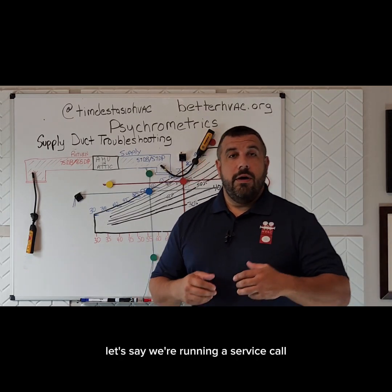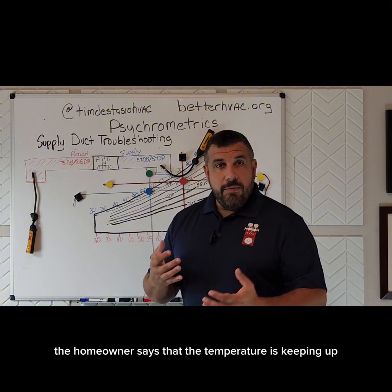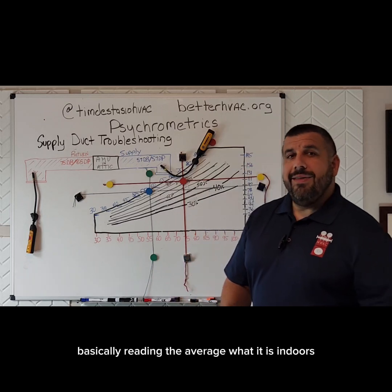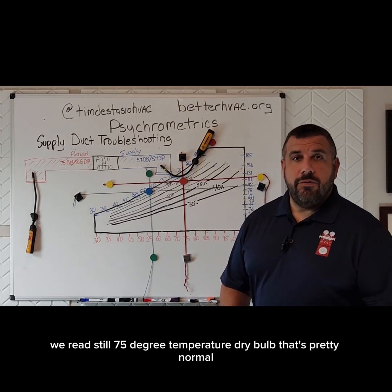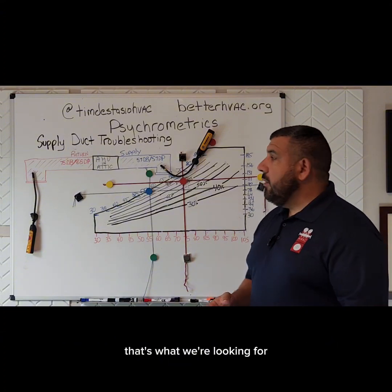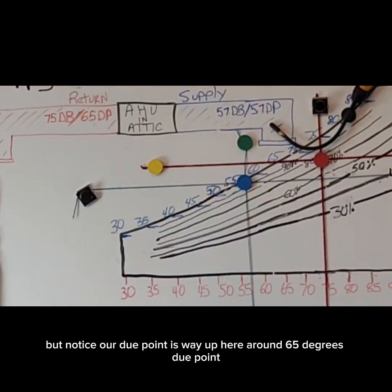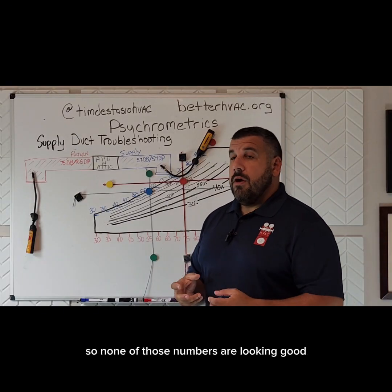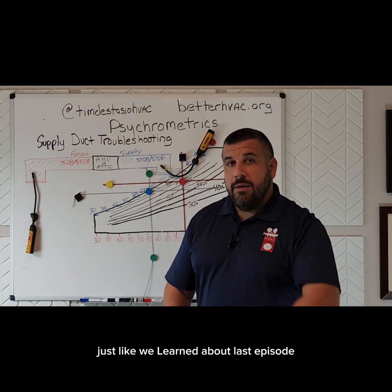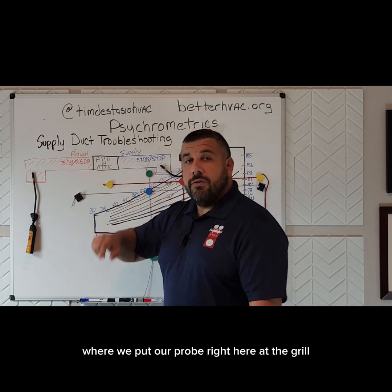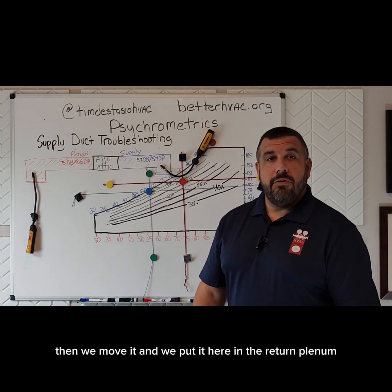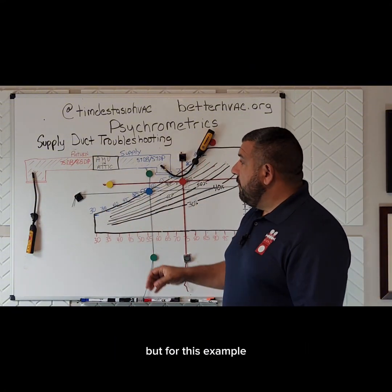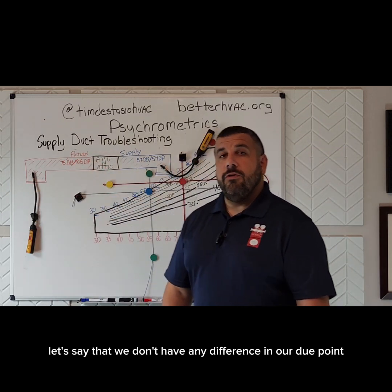Let's say we're running a service call and it's way too humid in the house. The homeowner says that the temperature is keeping up, it's just really humid and muggy. So we put in our probes and our return, basically reading the average of what it is indoors. We read still 75 degree dry bulb temperature — that's pretty normal. But notice our dew point is way up here around 65 degrees dew point. That's going to correspond to around 70% relative humidity. Of course, we want to do a duct screening, just like we learned about last episode, where we put our probe right here at the grill, then move it and put it here in the return plenum and see if we're picking up a bunch of moisture in our return duct. For this example, let's say that we don't have any difference in our dew point on our return side.